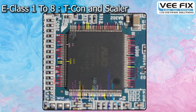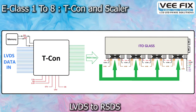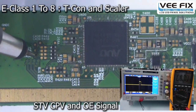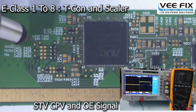In the T-CON controller IC, the basic function is conversion of LVDS data to RSDS data. That RSDS data is supplied to the source COF or X COF, which goes inside the panel glass as a triggering signal to the sub-pixel lines of red, green, and blue. Another function of this T-CON controller IC is to generate timing control signals like STV, CPV, and OE. You can see on the screen we are showing how we observe these STV, CPV, and OE pulses using a DSO.